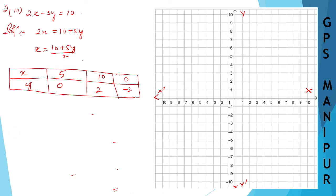Now let me draw the graph. The first point is x equals 5, y equals 0 — so the point (5, 0) is plotted here. The second point is x equals 10, y equals 2 — so the point (10, 2) is plotted here.